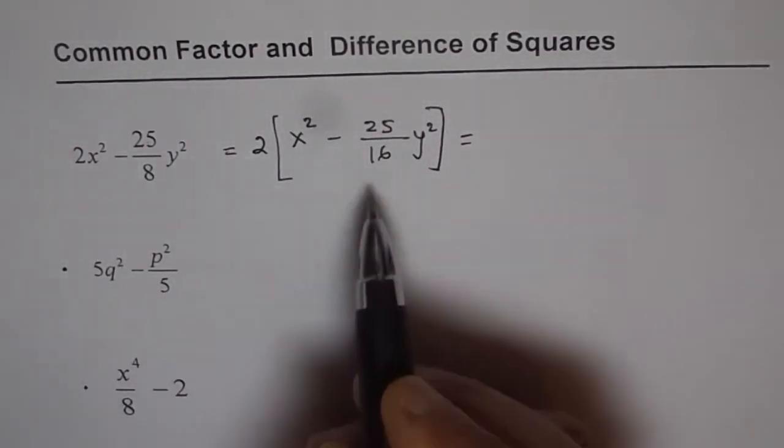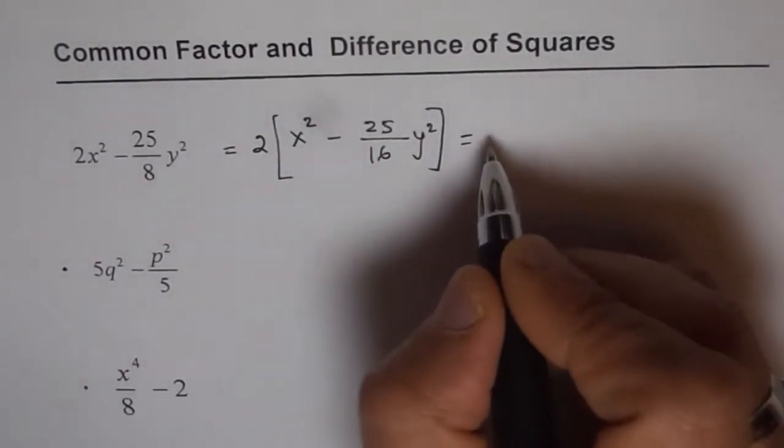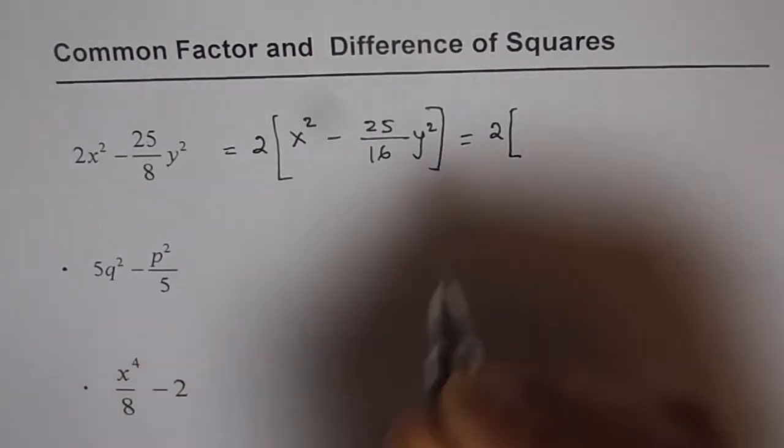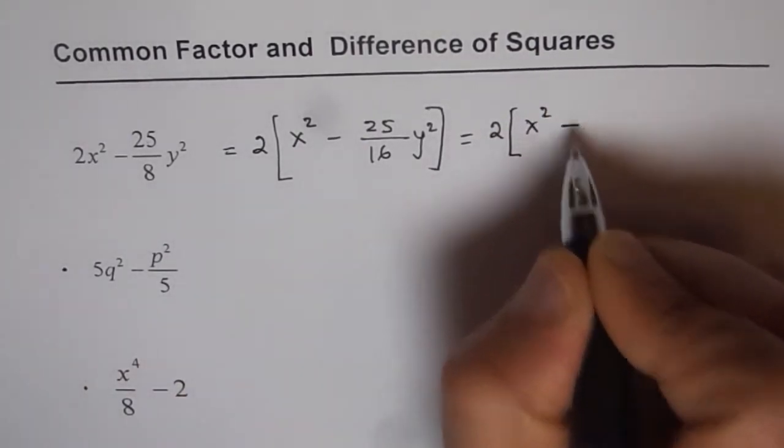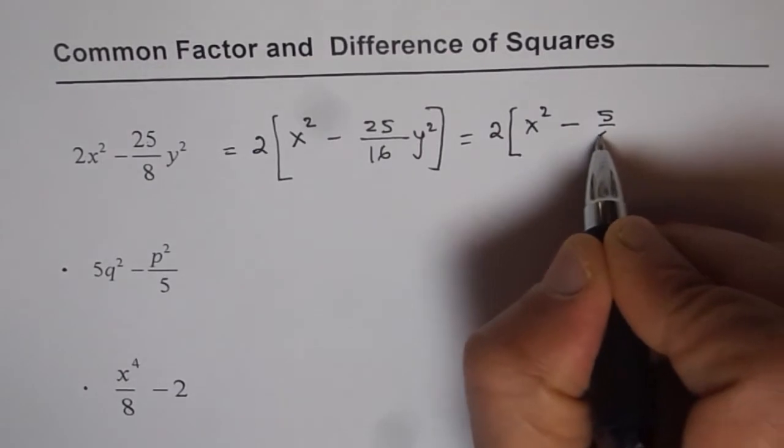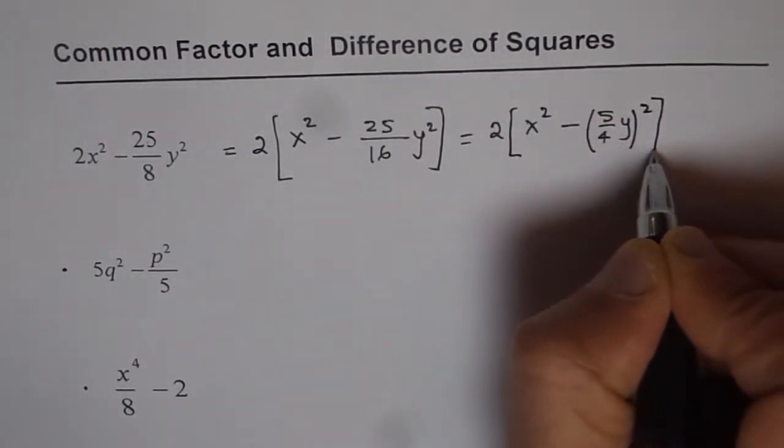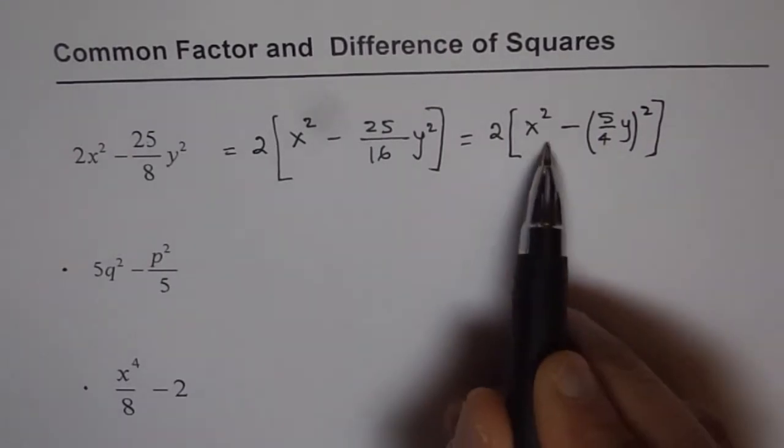So when we factor out, we kind of get squares here. So we get 2 which is already factored form of this expression. x² minus, you can write this as 5 over 4 y whole square. Do you see that? So we have difference of squares now.